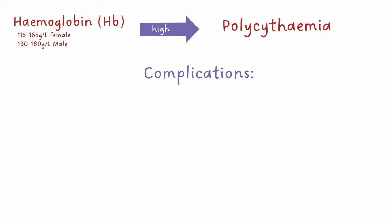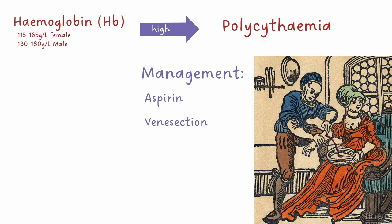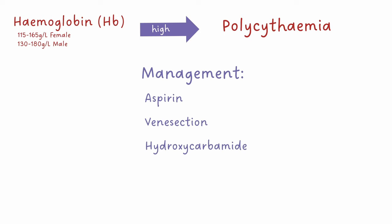Polycythemia is problematic as it can be symptomatic — for example, causing itching — but its most serious complication is blood clots. Long-term aspirin can be used to help reduce the risk of blood clotting. Venesection, or bloodletting, can be used to reduce the total volume of red cells in the blood. Hydroxycarbamide is a specialist medication used to treat polycythemia vera.